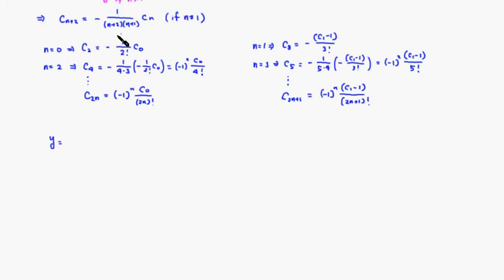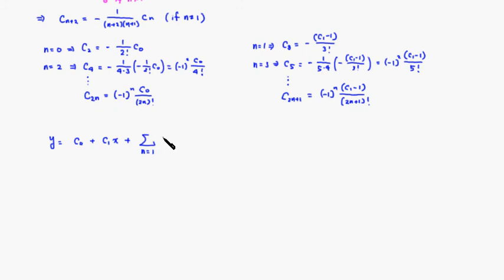These formulas are valid starting from n equals 2, so I'll write the first two terms outside explicitly: c0 plus c1·x. Then the x squared and higher even terms form a summation from n equals 1 to infinity of negative 1 to the nth power times c0 over 2n factorial times x to the 2n.